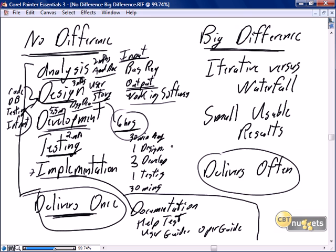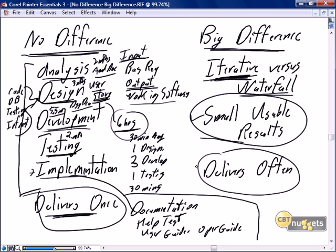The big difference is we do it many times in very short increments with a very short focus on a unique, specific requirement — a small, well-defined user story — as opposed to doing it all up front with large-scale all-requirements, all-design at once. Scrum is iterative versus traditional waterfall approaches, and the other big focus is on small, usable results delivered often.